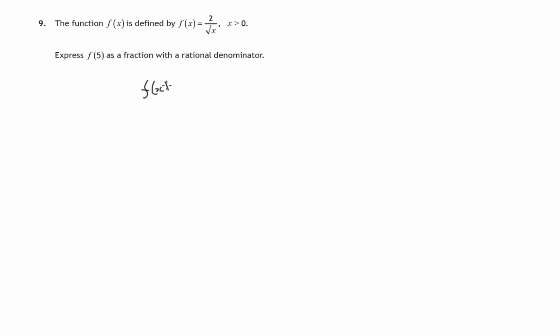So f(x) is defined to be 2 divided by the square root of x. If we replace x by 5, we'll get 2 divided by the square root of 5.